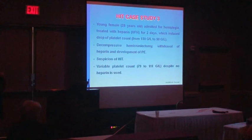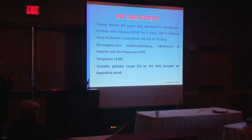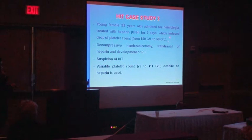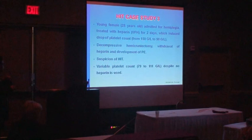Another very surprising and unusual but characteristic case also from Professor Simon Panzer in Vienna concerned a young 28-year-old female admitted for hemiplegia, treated with heparin and fractionated heparin for two days. This induced a drop in platelet count from 150 to 50 giga per liter. As her clinical context worsened, she had decompressive hemicraniectomy and heparin was withdrawn, which led to development of pulmonary embolism, though not too severe. HIT was suspected, and platelet count remained variable, just below or above 100 giga per liter, even after heparin was discontinued.